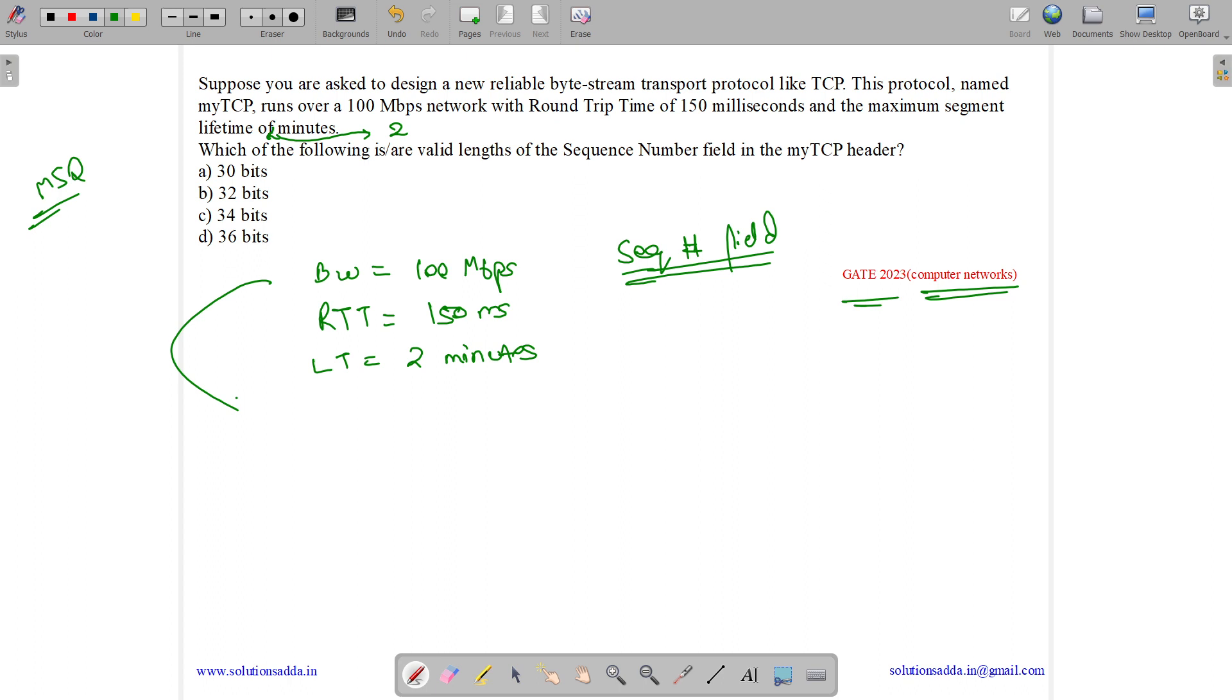The bandwidth is 100 Mbps, which means in one second how many bits are we transferring? We are transferring 100 megabits, which equals 100 × 10^6 bits.